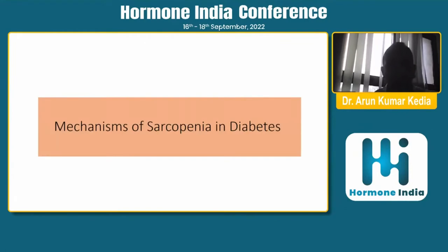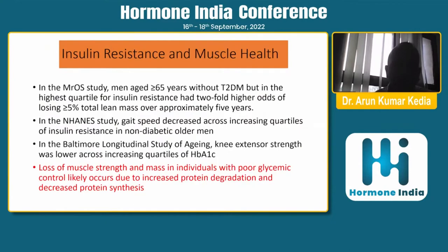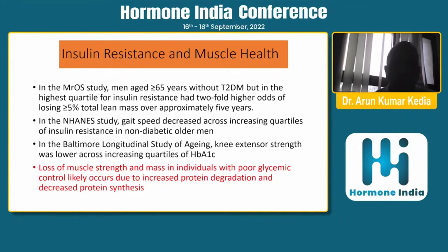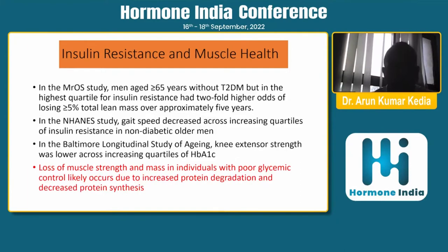The mechanisms of sarcopenia in diabetes include insulin resistance as an important factor. In a study on osteoporosis in men, men aged 65 and above without type 2 diabetes but in the highest quartile of insulin resistance showed a two-fold higher risk of losing more than 5% total lean mass over approximately 5 years. The NAN study found gait speed decreased across increasing quartiles of insulin resistance. The Baltimore Longitudinal Study of Aging showed knee extensor strength was lower across increasing HbA1c quartiles even before diabetes was diagnosed.